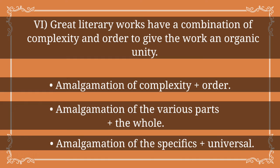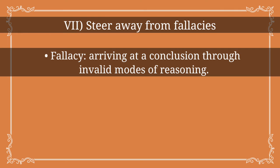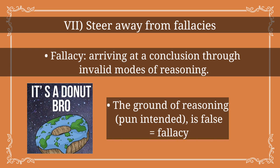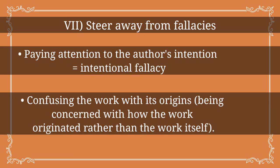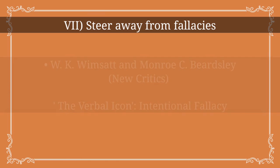New Critics also tell you what not to do — steer away from fallacies. A fallacy is an invalid mode of reasoning. New Critics maintained that paying too much attention to the author's intention — what the author is trying to mean or say — is to confuse the poem with its origin. Wimsatt and Beardsley, prominent New Critics, call this error the intentional fallacy. The New Critics argue that the intention of the author is neither available nor desirable — not available because the author does not leave back explanations and contexts, and even if available, the meaning the work expresses may be far richer, more complex, and deeper than the poet actually intended.